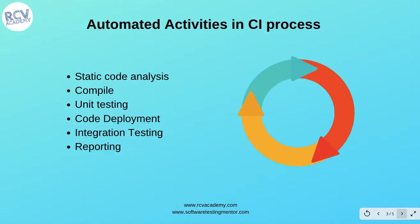There are many automated activities within the continuous integration process. The first automated activity is static code analysis, then compilation of the code, followed by unit testing, code deployment, integration testing, and reporting. There are many tools and scripting languages available to achieve all these automation activities in the continuous integration process.